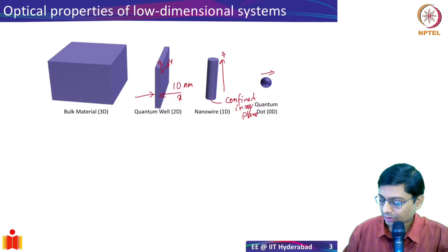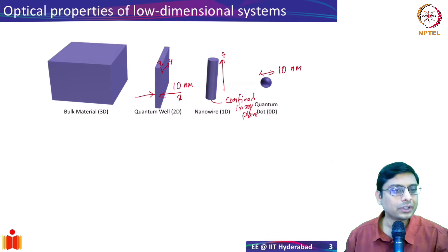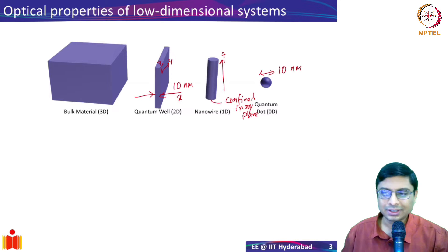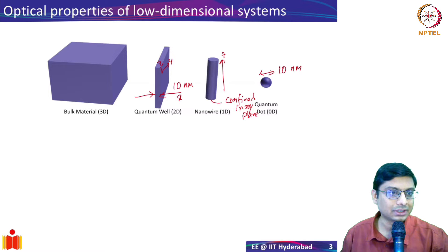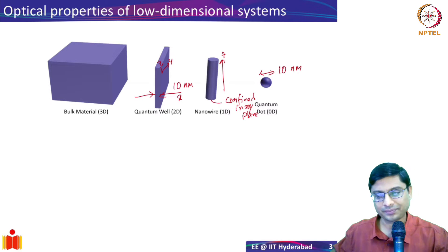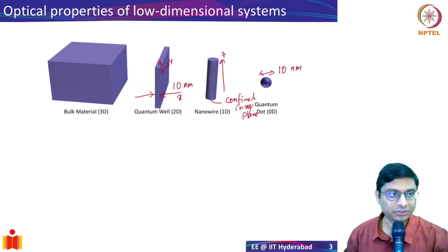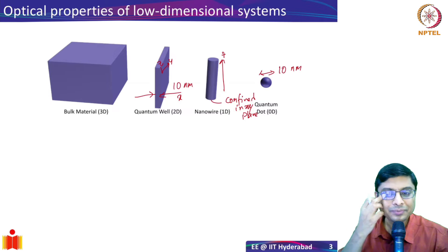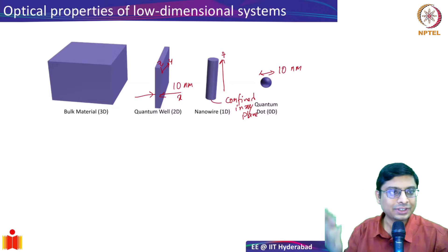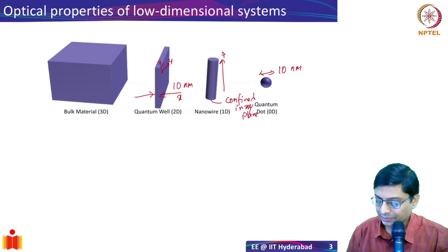The diameter of a quantum dot could be something like 10 nanometers. So far in the last week we looked at material properties but never really took the size of the structure into account. This is an extension of that — what happens if you have such structures? How do the optical properties change? Let's consider metals first, since that's where we left off last week.